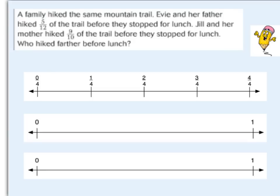Here's another problem: a family hiked the same mountain trail. Evie and her father hiked five-twelfths of the trail before they stopped for lunch. Jill and her mother hiked nine-tenths of the trail before they stopped for lunch. Who hiked farther before lunch — Evie and her dad, or Jill and her mom? Remember at the beginning of the lesson we talked about how we were going to use benchmarks to compare our fractions.